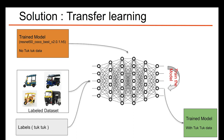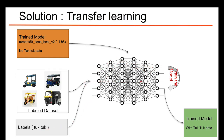To do this, we can use the technique called transfer learning. We take the same pre-trained model — which has no tuk-tuk data — and provide a labeled dataset with many tuk-tuk images. We feed these labels into the neural network, train the model, and output a trained H5 model file.